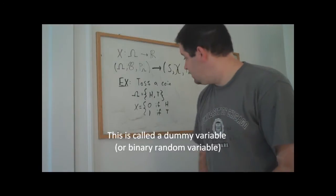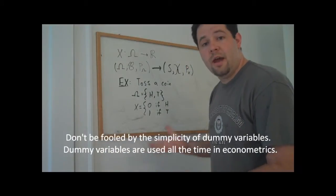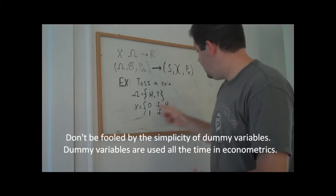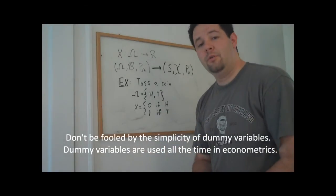So here's one possible random variable. The outcome of the random variable is zero if the realization of the experiment was heads, and it's one if the realization of the experiment was tails.